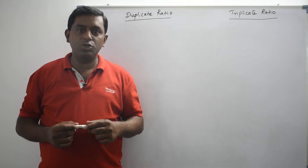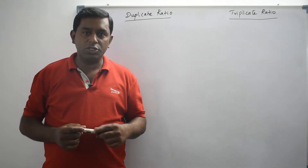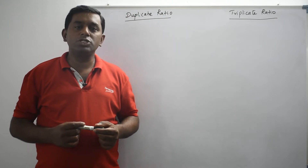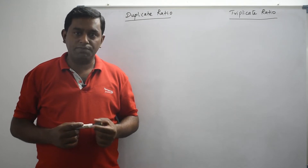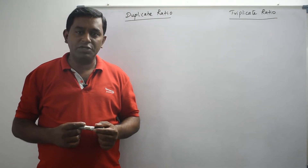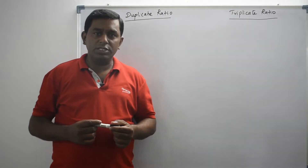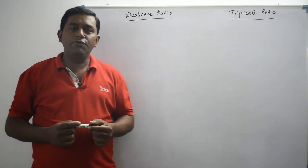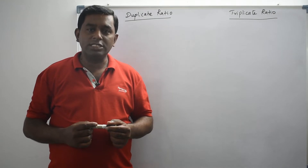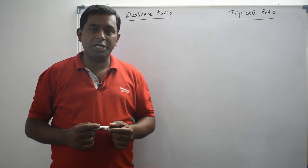In this section, we are going to see duplicate ratio and triplicate ratio. First, let's understand what is duplicate ratio. If your ratio is a compound of itself, it's called duplicate ratio. In other words, if you compound two same ratios, the answer you get is called duplicate ratio.